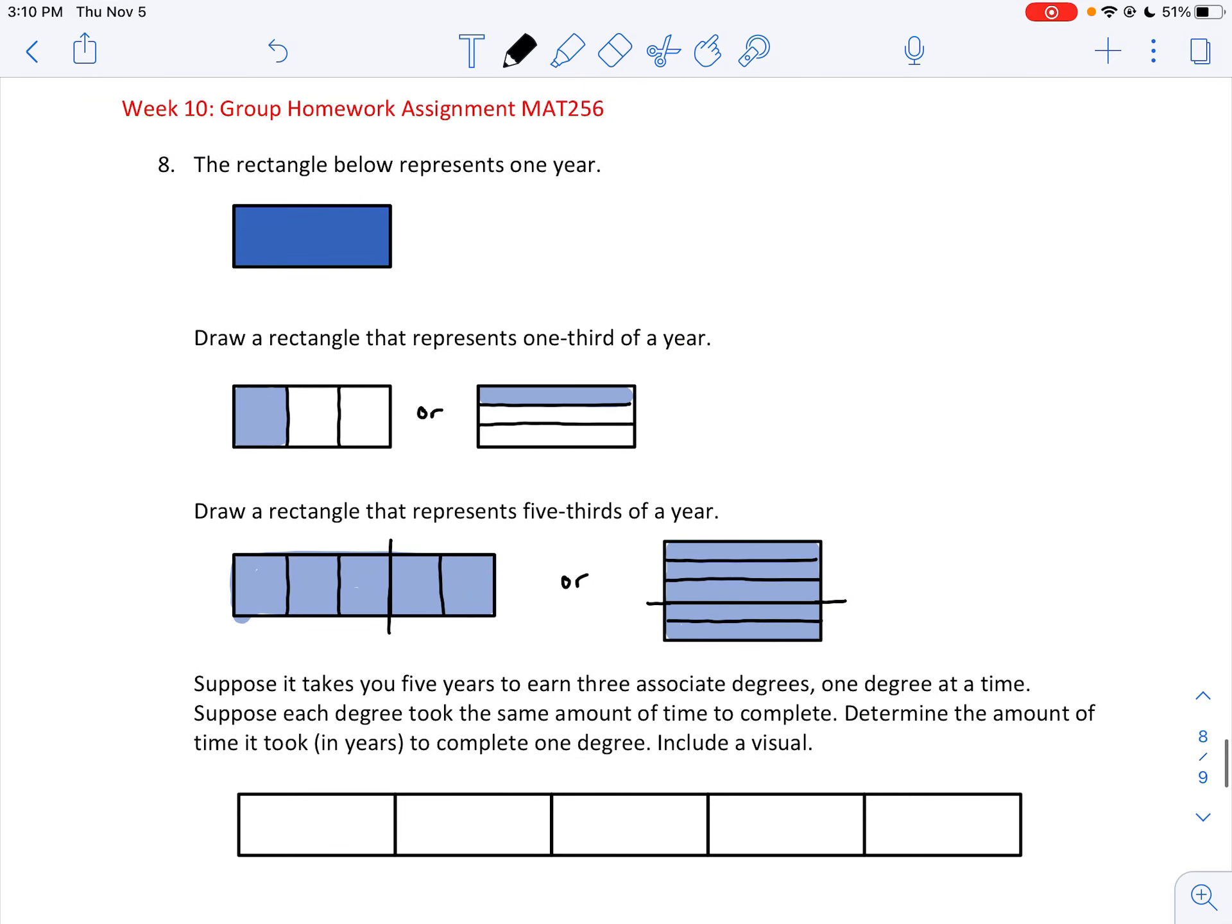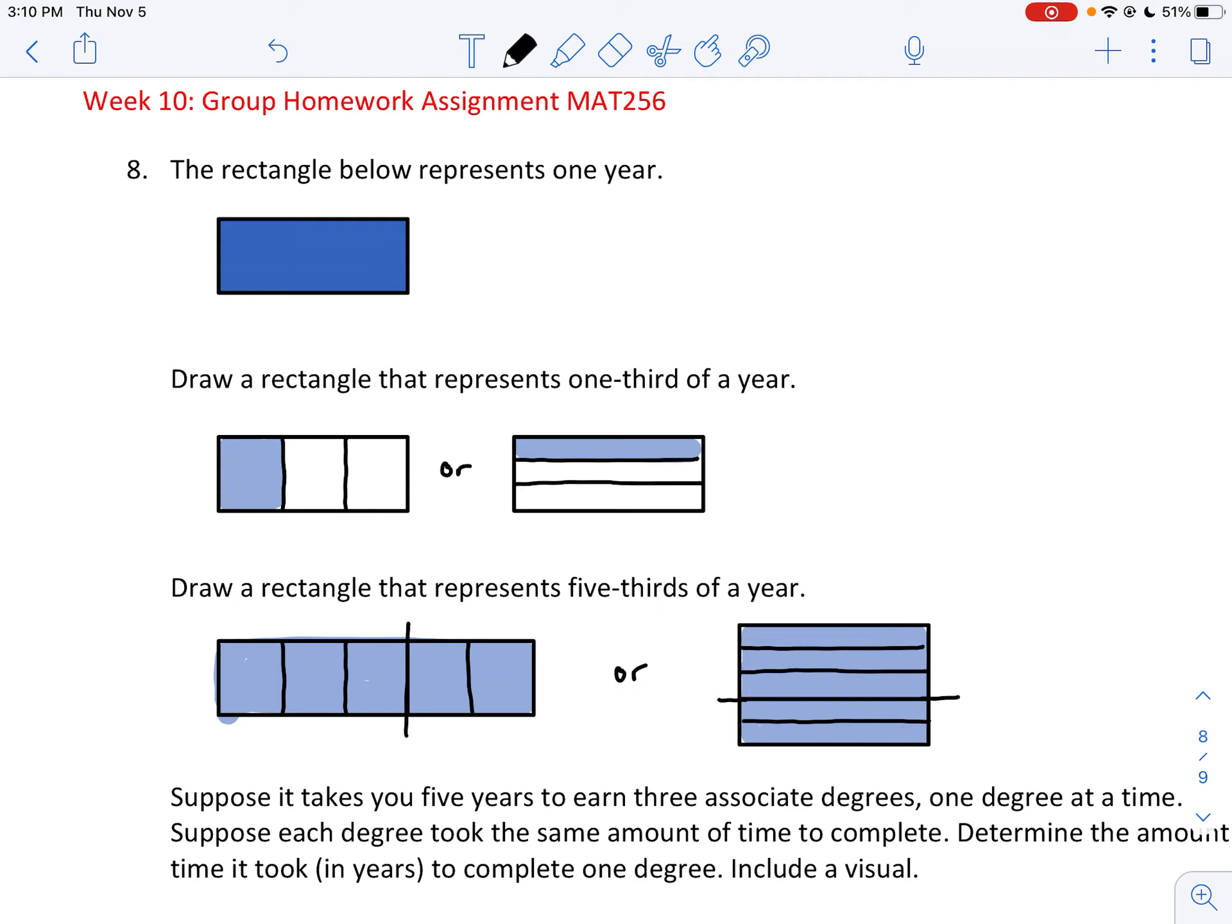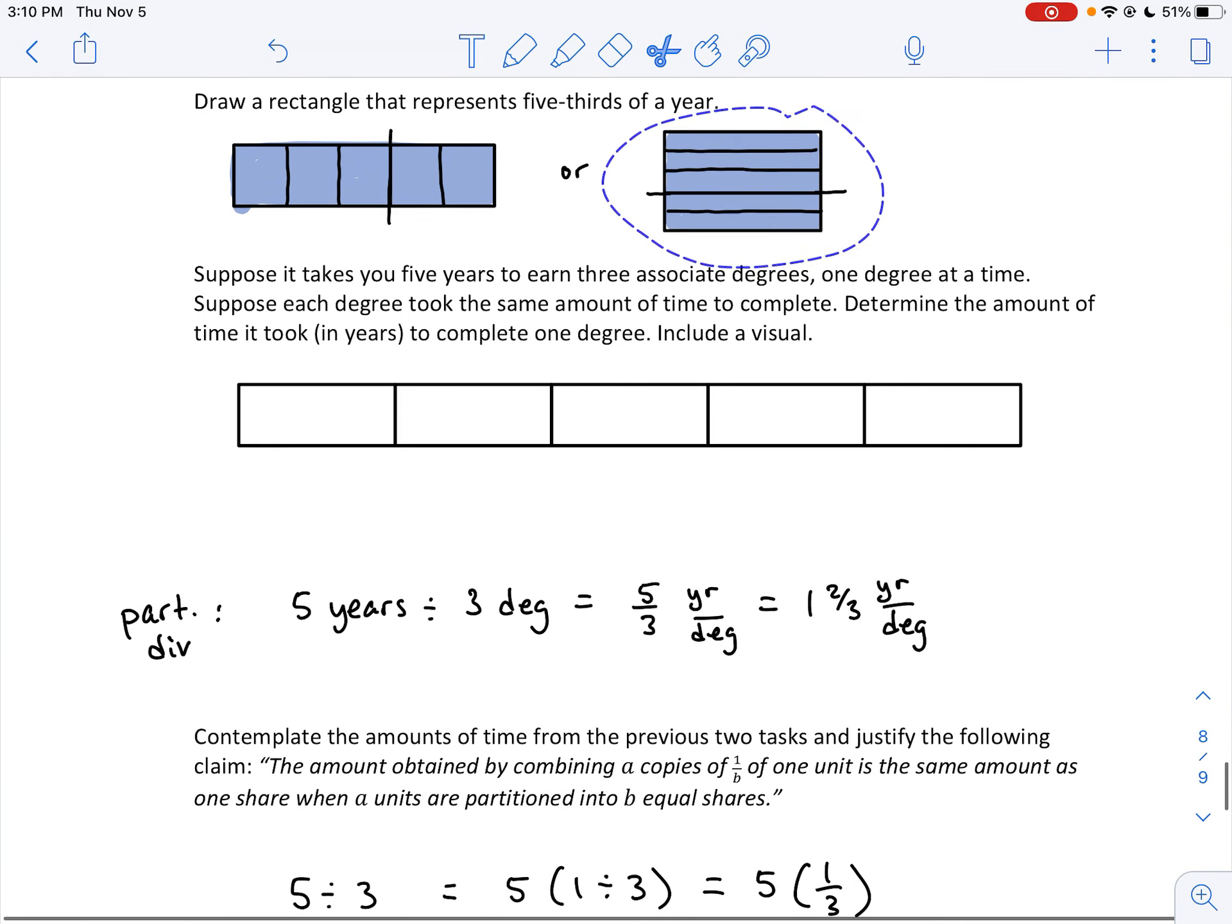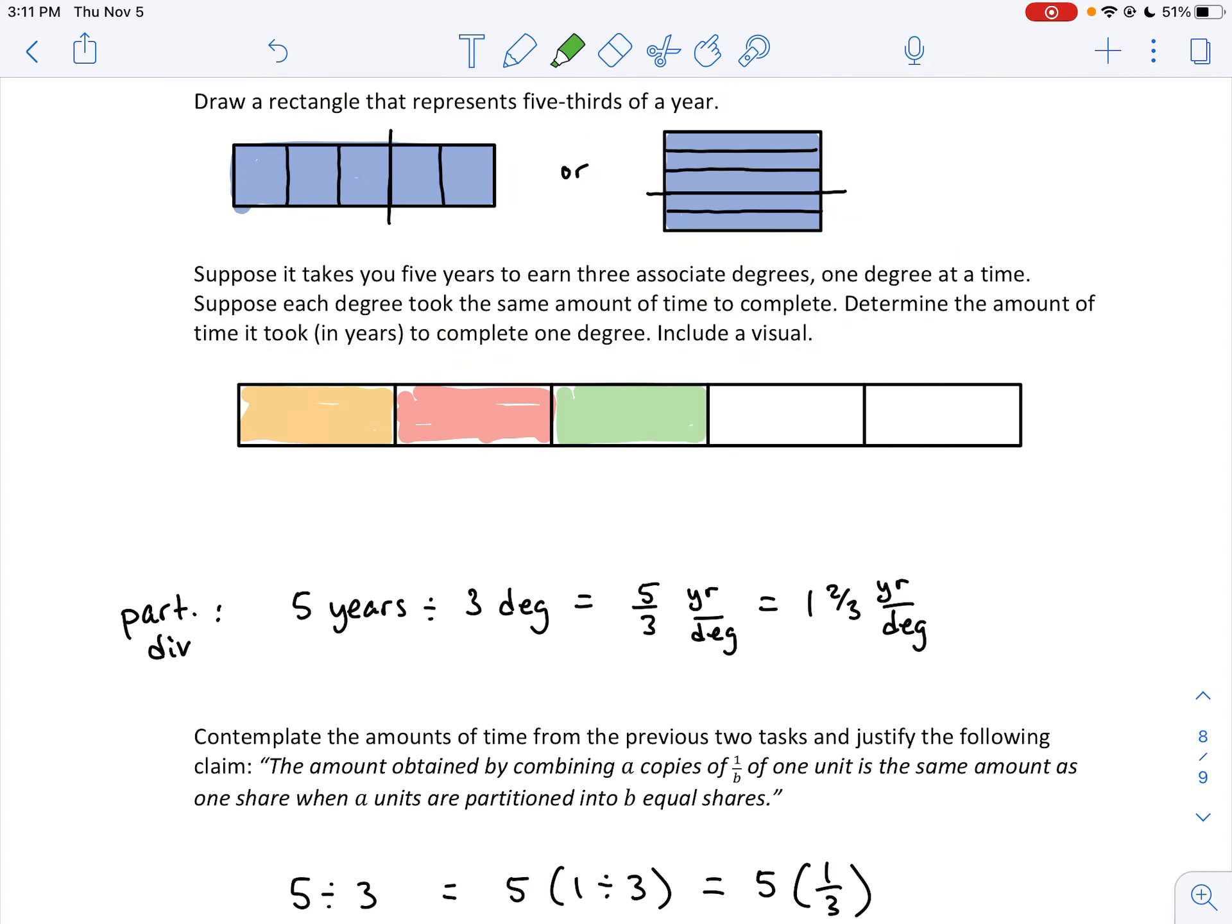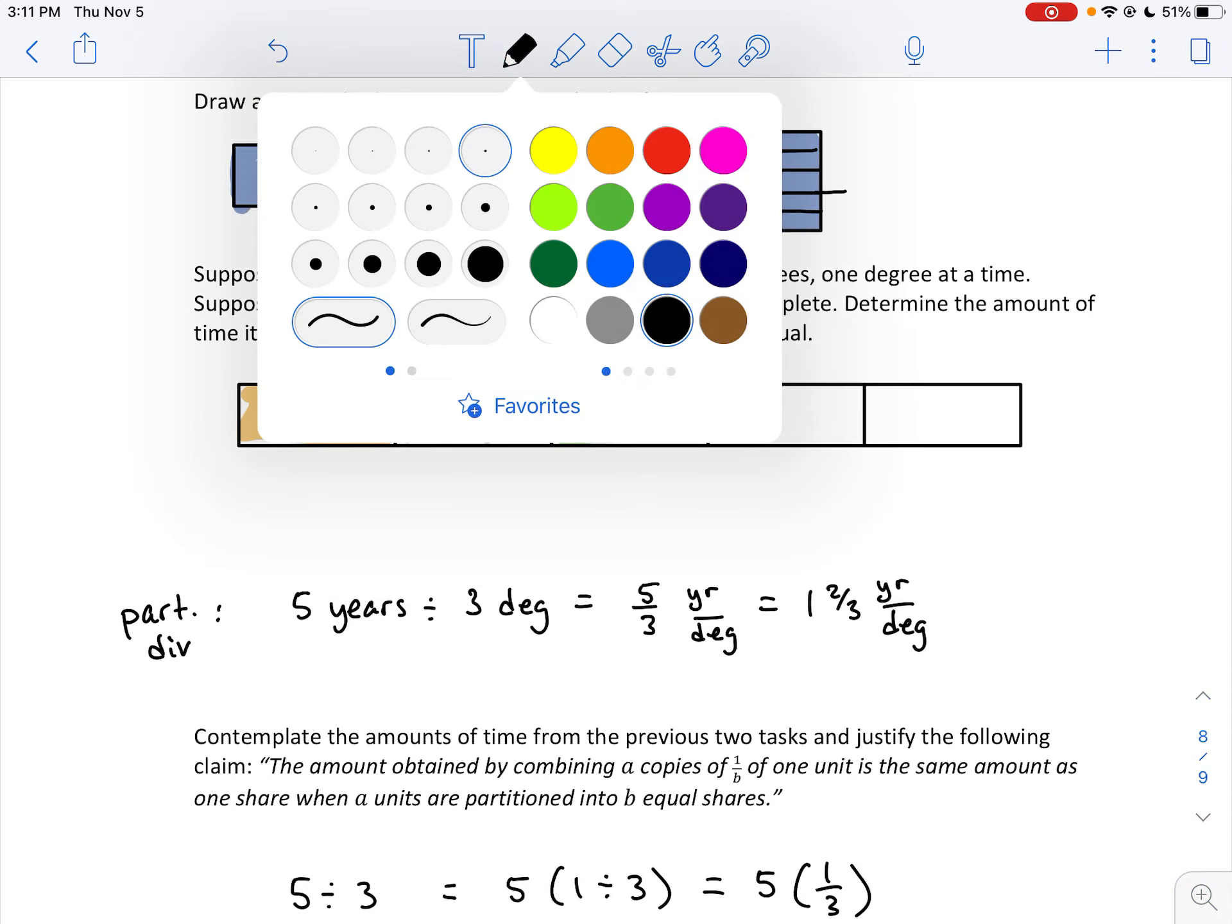Okay, let's look at the last one here. Draw a rectangle that represents one-third of a year. My rectangle I drew is the one that's in blue. We're so used to breaking up that way, but you could also break it up into rows. And so here's a long, skinny blue rectangle. And then here's five-thirds where you could do five-thirds this way. Now, suppose it takes you five years to earn three associate's degrees. So I've drawn five rectangles here that represent five years. And there's lots of ways to figure out how long it's going to take to get one degree. You could start breaking up, if I color code, you could say, okay, well, one degree is going to take up this one.